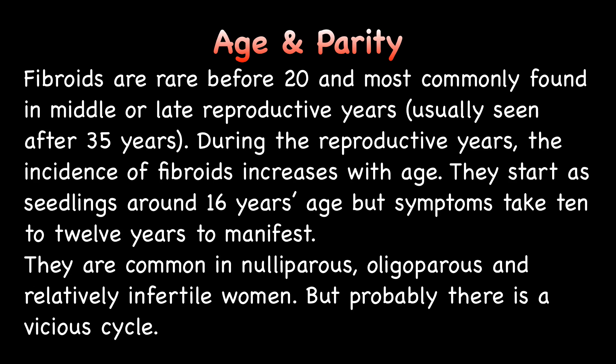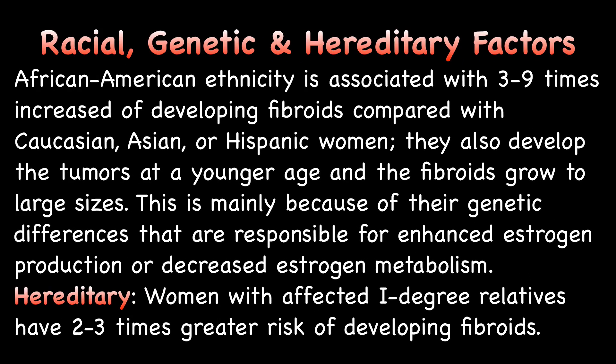Now let us consider the various risk factors for fibroids. Fibroids are rare before age 20 and most commonly found in the middle or late reproductive years, usually after 35 years. During the reproductive years, the incidence of fibroids increases with age — they start as seedlings around 16 to 20 years of age, but symptoms take 10 to 12 years to manifest. They are common in nulliparous or oligoparous and relatively infertile women. Race and genetics are important risk factors. African-American ethnicity is associated with a 3 to 9 times increased risk of developing fibroids compared with Caucasian, Asian, or Hispanic women.